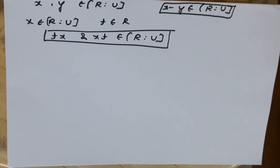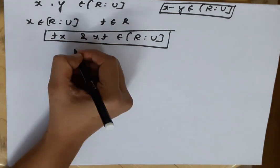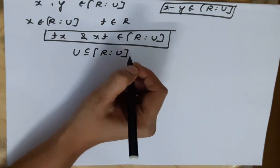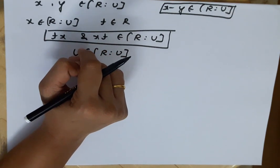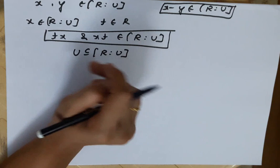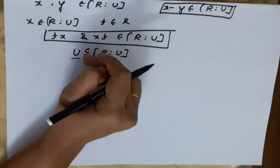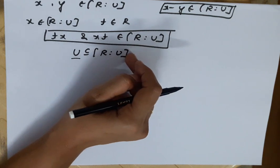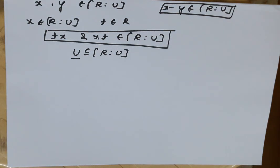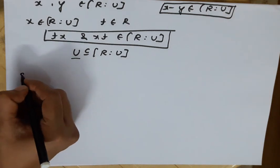This is an assignment problem for you. We have to show that U is contained in R:U — meaning every element of U will belong to this set. Solve Question 8 and send your solutions to my Telegram channel or Facebook page. If you are studying seriously, solve them all and I will check that there are no mistakes. This will be good practice time for you.